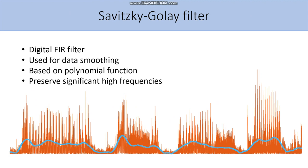Savitzky-Golay filter is a digital finite impulse response filter used for data smoothing. It is based on polynomial function. And very importantly for us, it preserves significant high frequencies unlike other most commonly used averaging filters. Because of the application in which we want to preserve some high frequency, we decided to use Savitzky-Golay filter with combination of fractional order calculus.